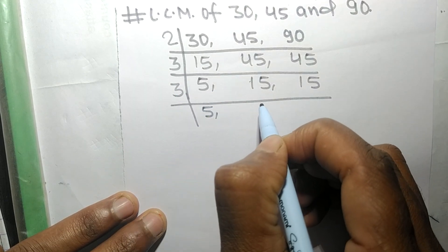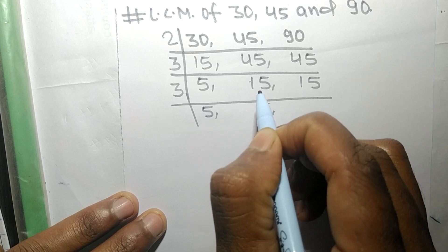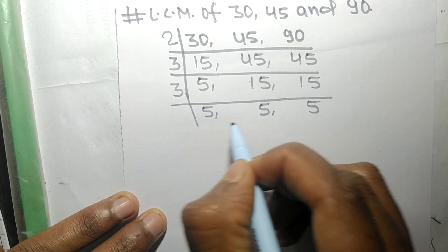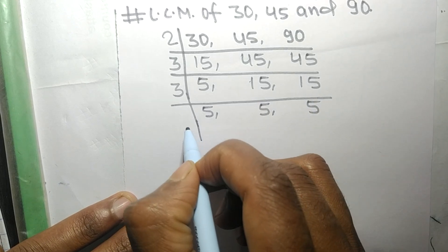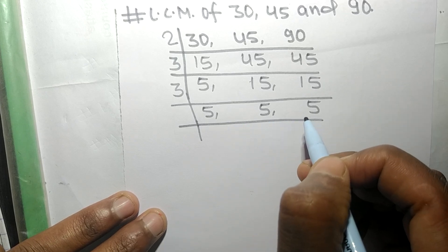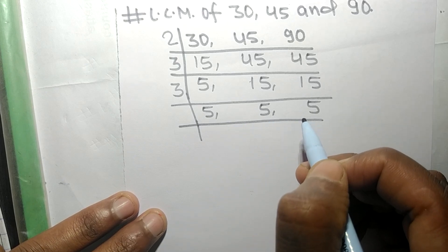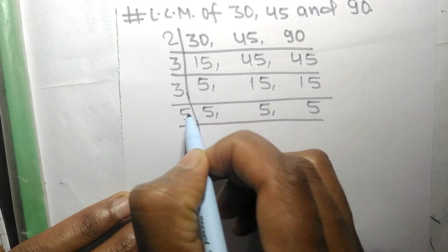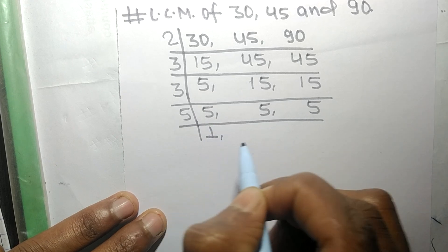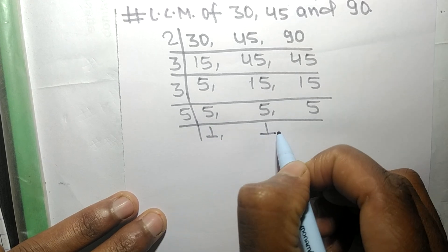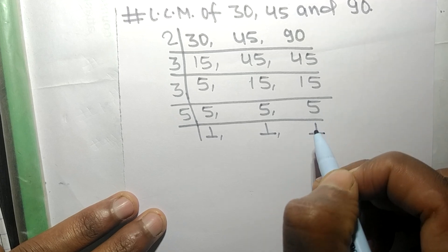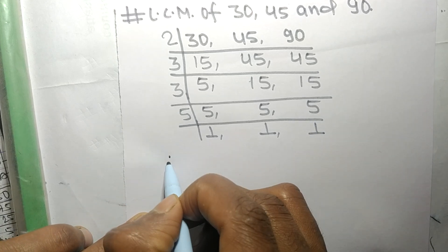3 times 5 equals 15, and 3 times 5 equals 15. Now all these numbers are exactly divisible by 5. 5 times 1 equals 5, 5 times 1 equals 5, and 5 times 1 equals 5.